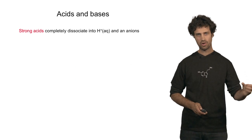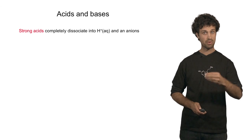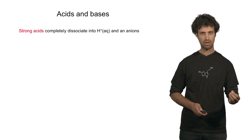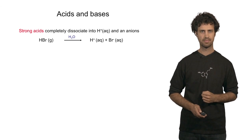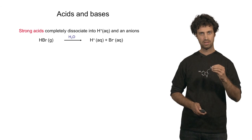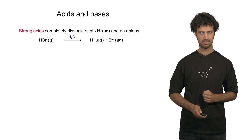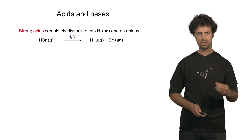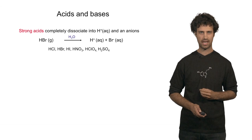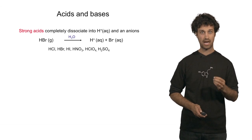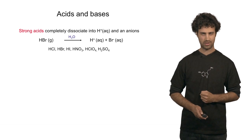We know that there are strong acids and weak acids. A strong acid is an acid that completely dissociates into protons and the corresponding anion. An example is hydrobromic acid, which dissociates into protons and bromine anions. There are six major strong acids you should remember: hydrochloric acid, hydrobromic acid, hydroiodic acid, nitric acid, perchloric acid, and sulfuric acid.